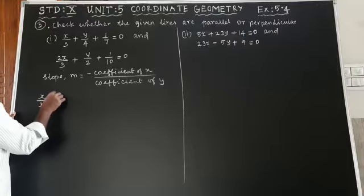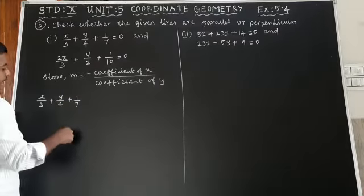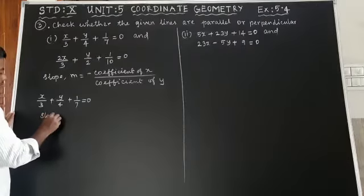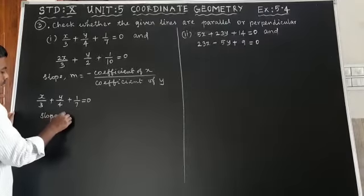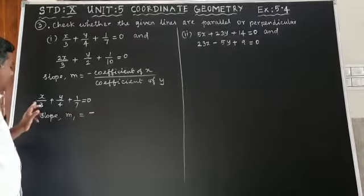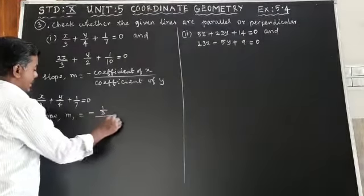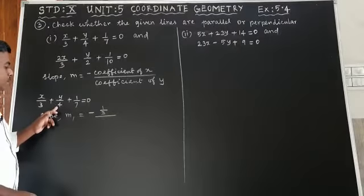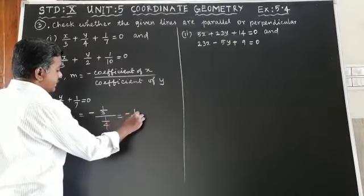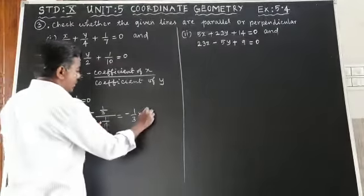For x/3 + y/4 + 1/7 = 0, slope m1 is equal to minus the coefficient of x, which is 1/3, divided by the coefficient of y, which is 1/4. So m1 = -1/3 multiplied by the reciprocal of 1/4, which is 4/1, giving m1 = -4/3.